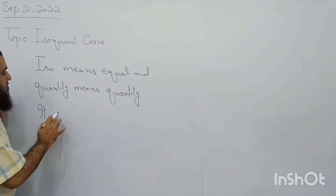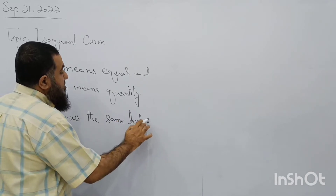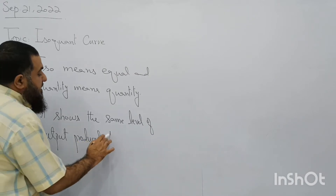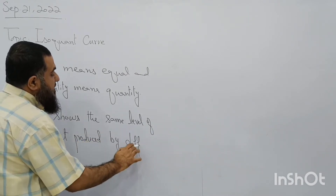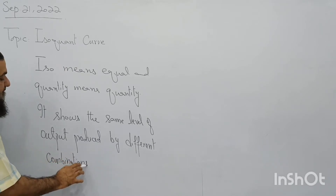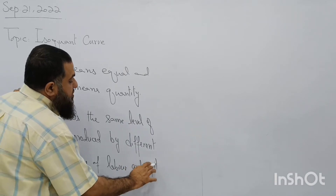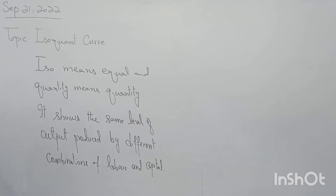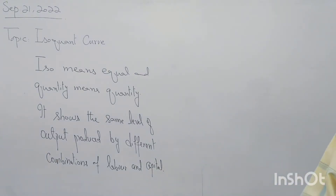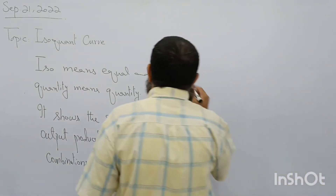The isoquant curve shows the same level of output produced by different combinations of labor and capital. We have two factors which are substitutes for each other. Sometimes we use more labor and less capital to produce the same level of output, and sometimes we use more capital and less labor — again the level of output remains the same. So if I draw the isoquant curve...